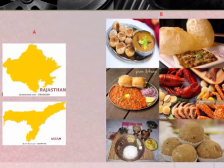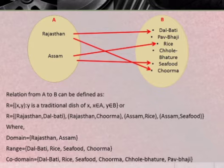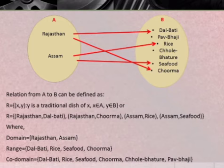Let's take another example where set A denotes Rajasthan and Assam, and set B denotes dalbati, pav bhaji, rice, chole bhature, seafood, and churma. Then, relation from A to B can be defined as R equals the set of ordered pairs X, Y such that Y is a traditional dish of X, where X belongs to A and Y belongs to B. Or, R equals: Rajasthan dalbati, Rajasthan churma, Assam rice, and Assam seafood.